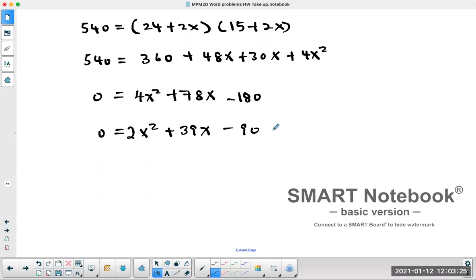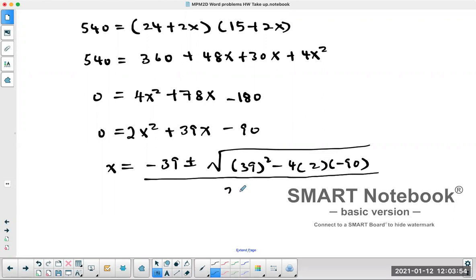Is this factorable? Well, I'm not sure this is factorable, so I'm going to use the quadratic formula. So x equals minus b plus or minus the square root of b squared minus 4 times a times c, all divided by 2 times a.